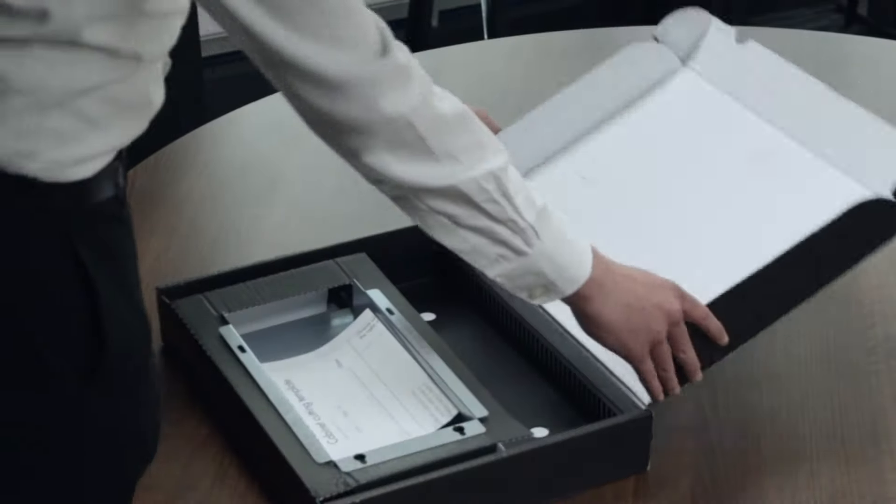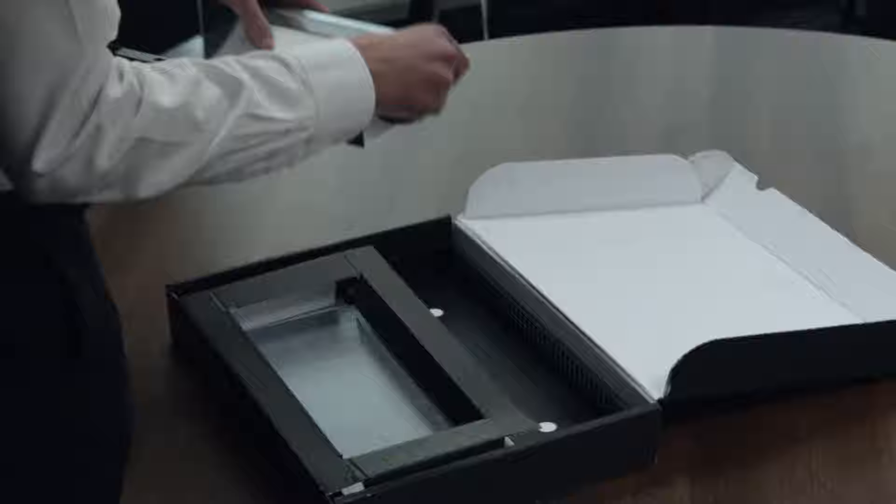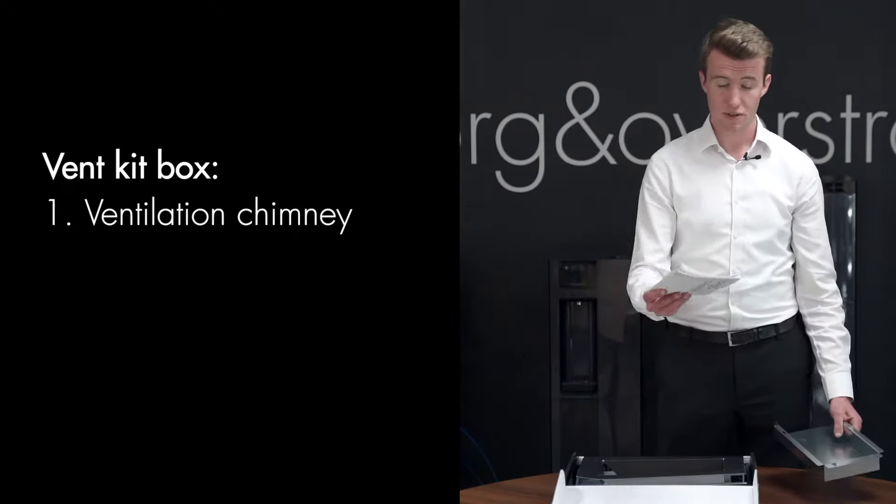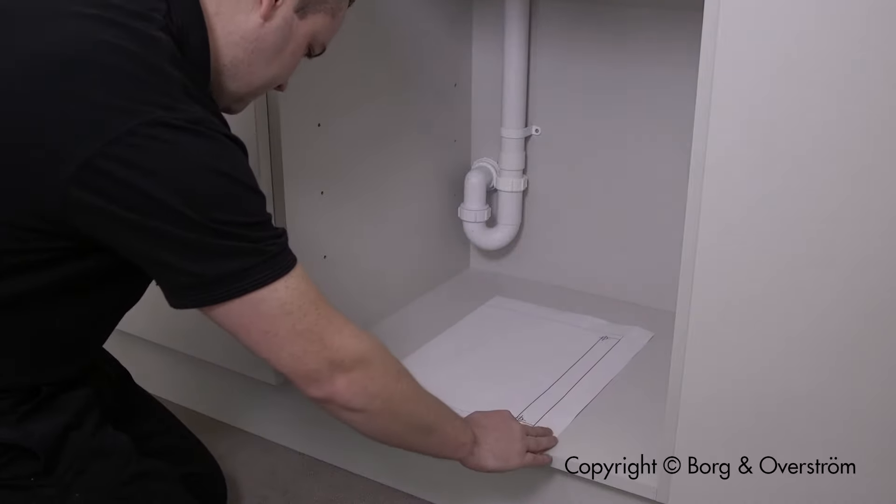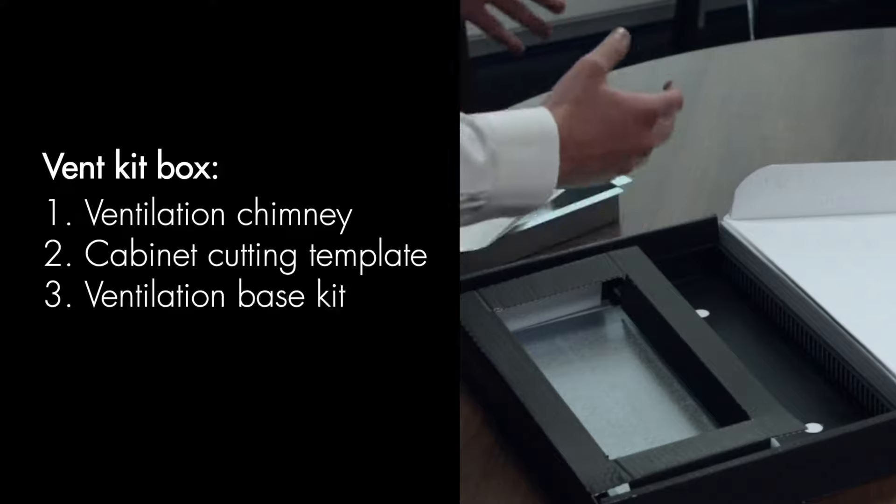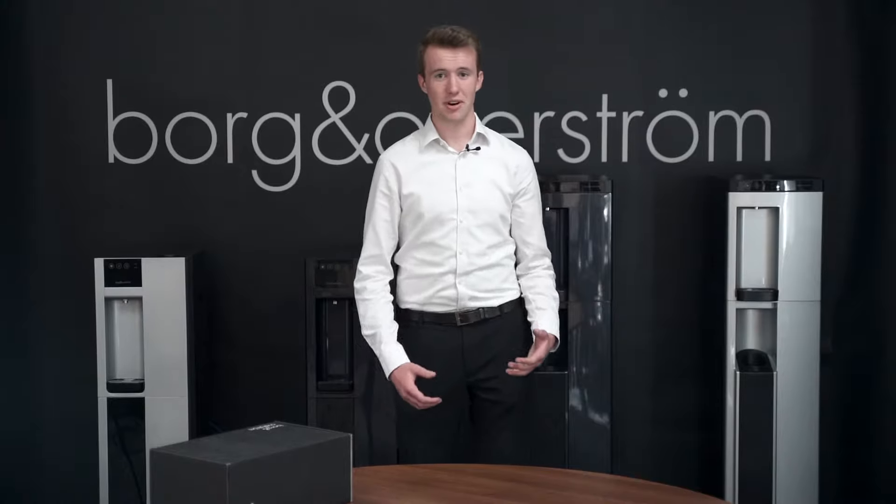In the box, you're going to have the ventilation chimney, which fits on the back of the Procore unit. Inside that, you'll find the cutting template. There's a video online which shows how you can use this. And then in the main part of the box itself is the ventilation base.